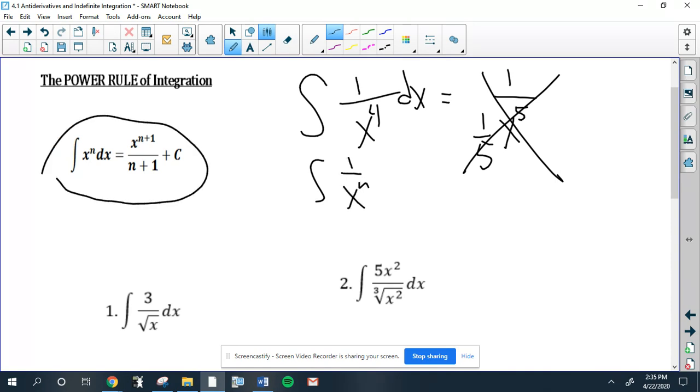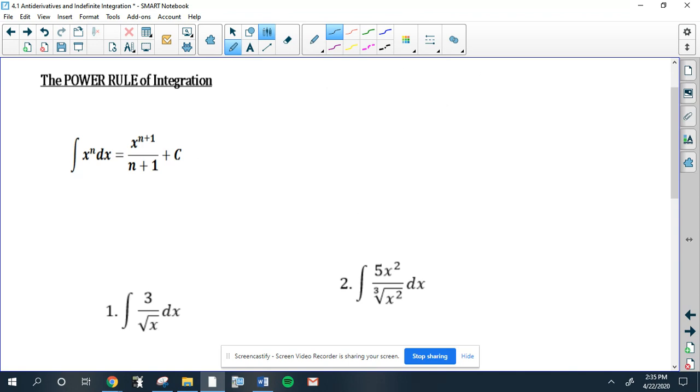You only have a formula for x to the n. So today we're going to look at a way to get around that. Before we start, I just want to remind you that you can only use this power rule for any n that isn't equal to negative one. We cannot integrate this yet, that won't be until chapter five.